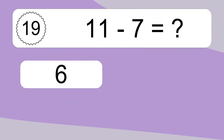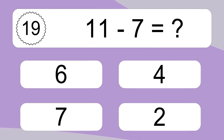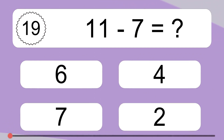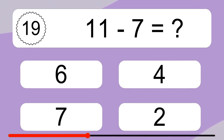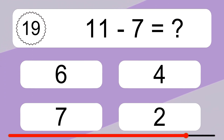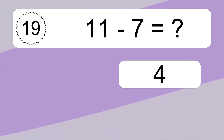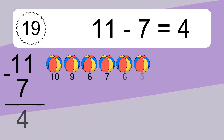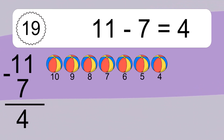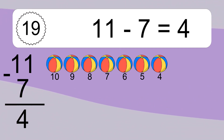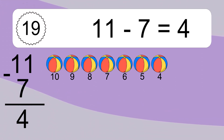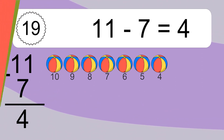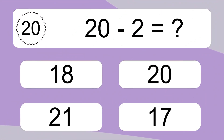11 minus 7 equals what? 11 minus 7 equals 4. Let's count it: 10, 9, 8, 7, 6, 5, 4.